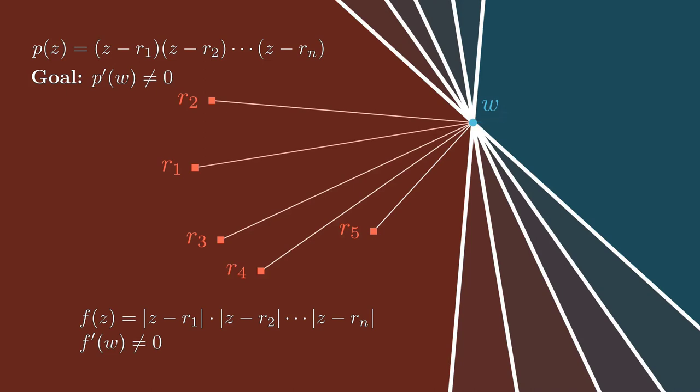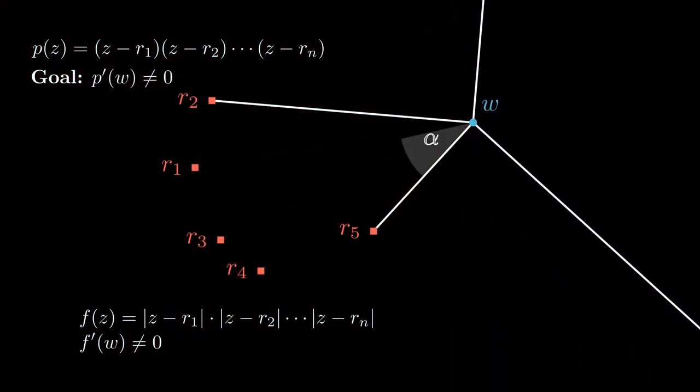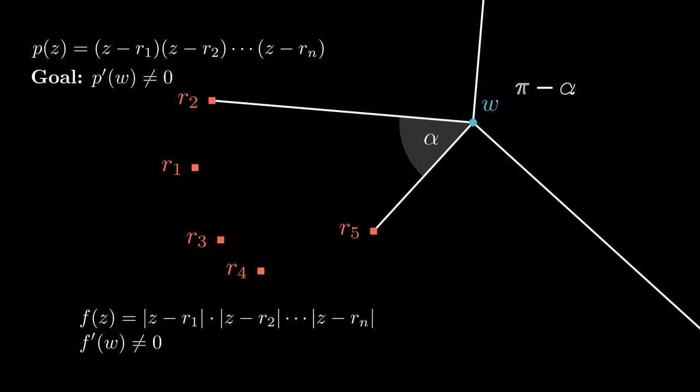Well, why does this work in general? I mean, this is just one picture. How do I know this is always going to work? Well, if you're standing at the point w and you're looking out at the roots, you'd see those roots spanning an angle of alpha. The half spaces would then intersect in an angle of pi minus alpha, 180 degrees minus alpha.